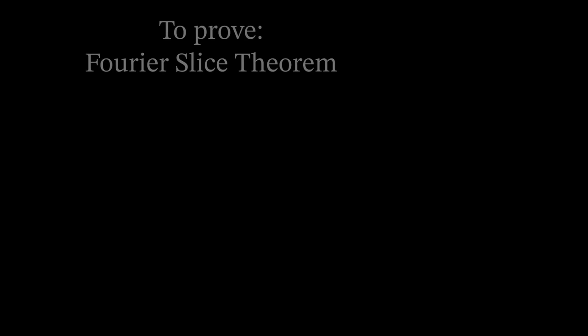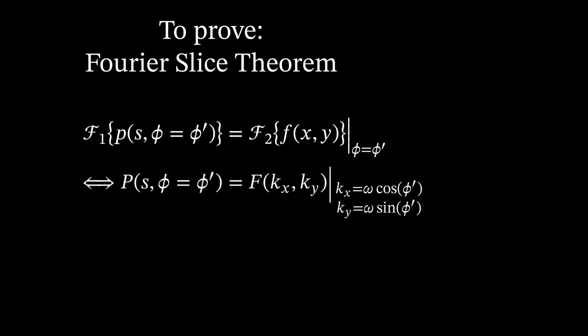Let's walk through this proof. The Fourier slice theorem looks like this. The 1D Fourier transform of the detector function on the left and the 2D transform of the object function on the right. Note that we take only one angle, so one slice on both sides. The second line is only a small rewrite of this.